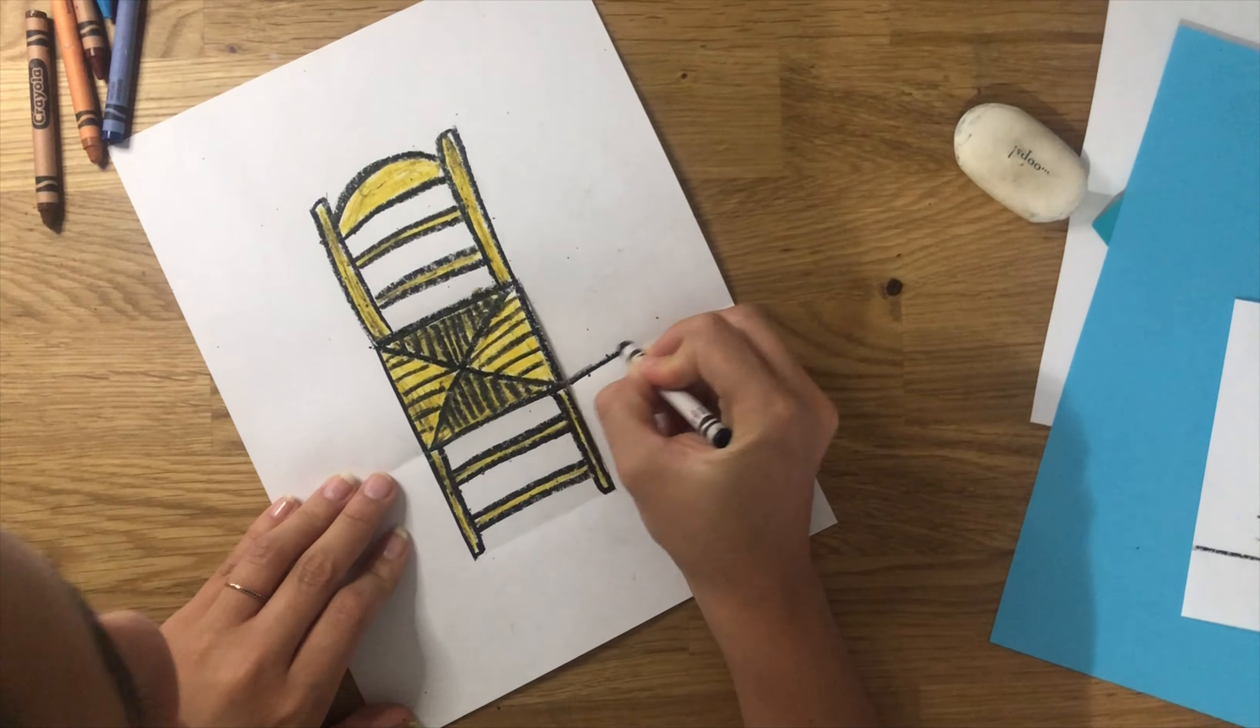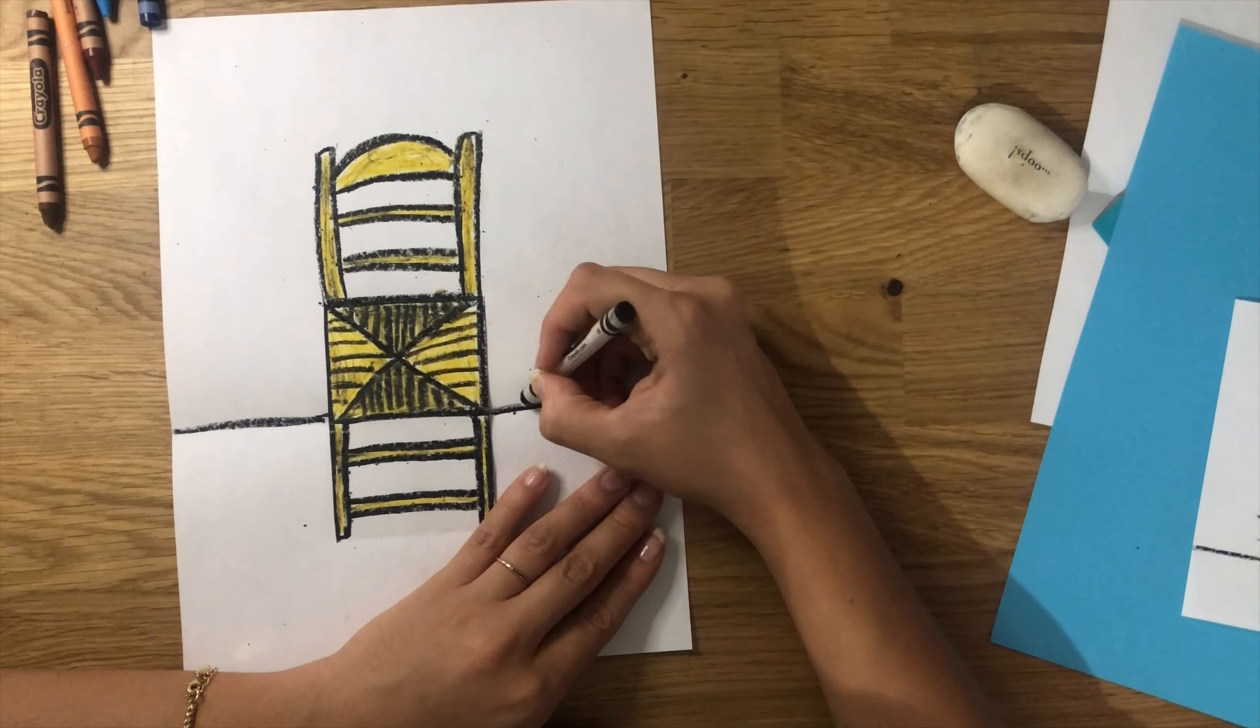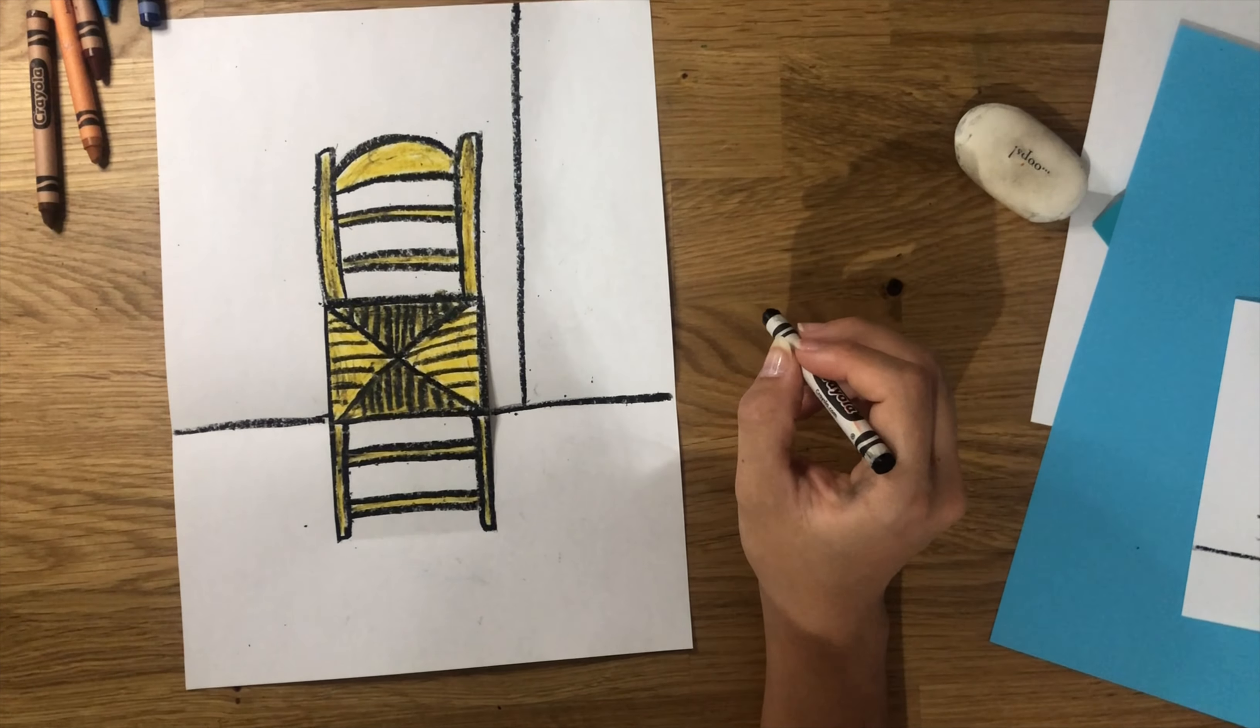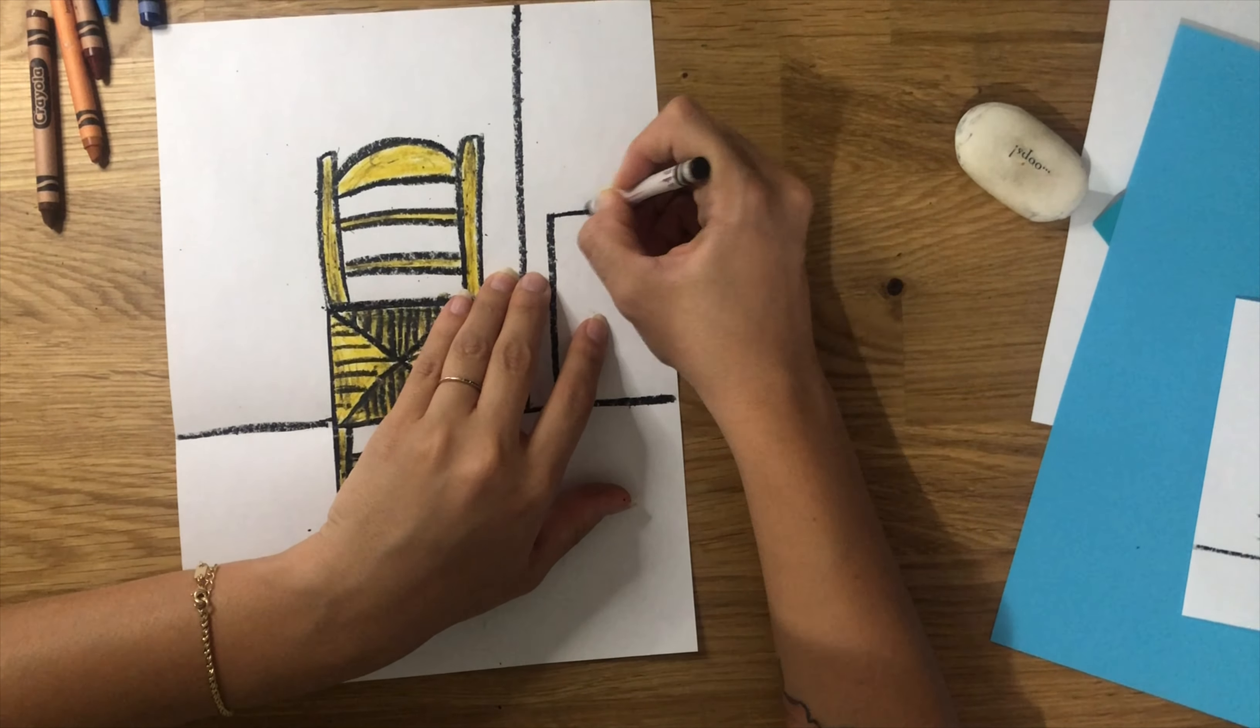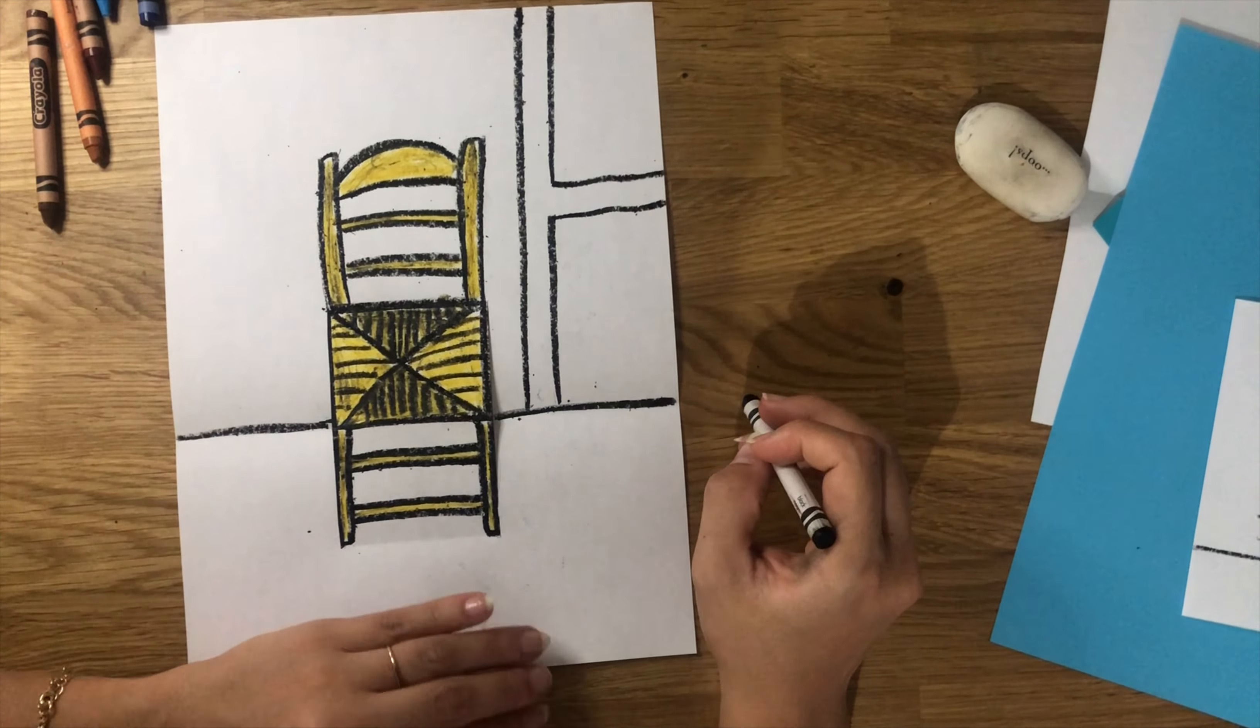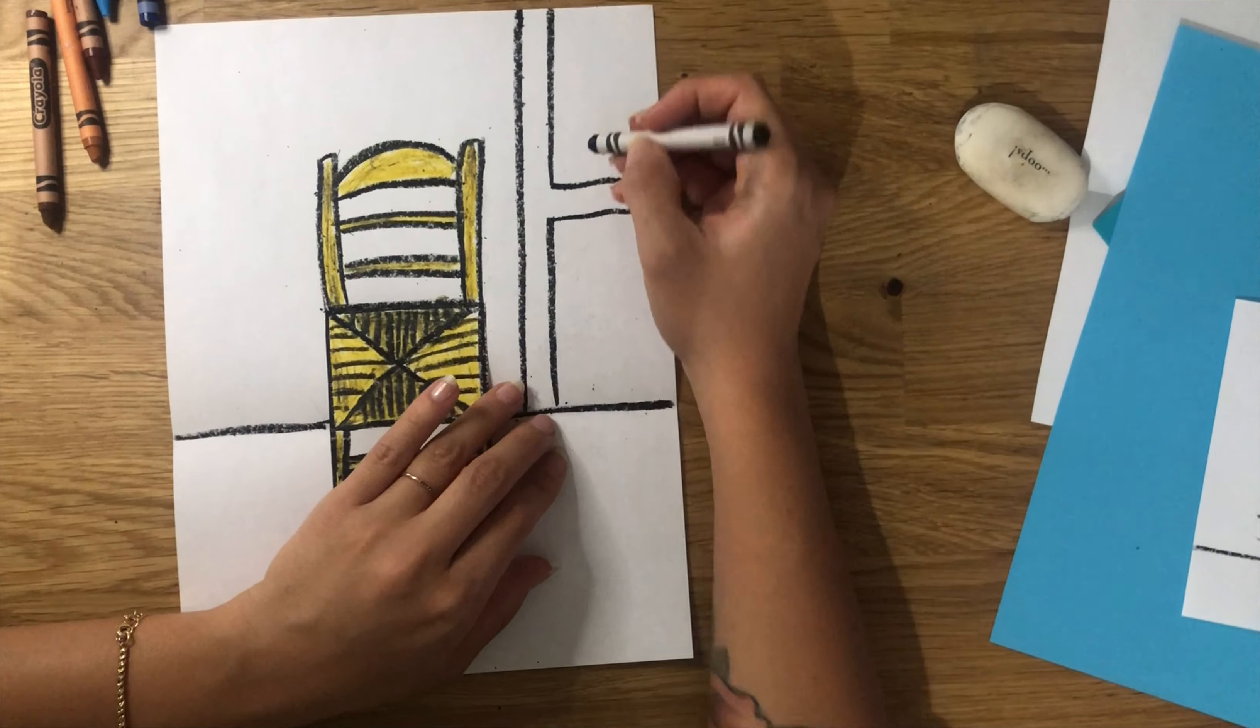For the floor, we're just going to trace the line that we already have because we folded the paper. On the right side of the chair, do a line that goes from the line of the floor all the way up to the top of the paper. Add an unfinished square shape on the bottom and top of the door and then a small rectangle unfinished shape on the middle.